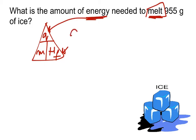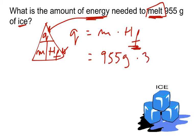So, Q would be simply equal to M times H of F, and since the substance is solid water, ice will be equal to the 955 grams, times the H of F for water. Now, once again, the heat of fusion for water can be found on table B, and if I'm not mistaken, it's 334 joules per gram.